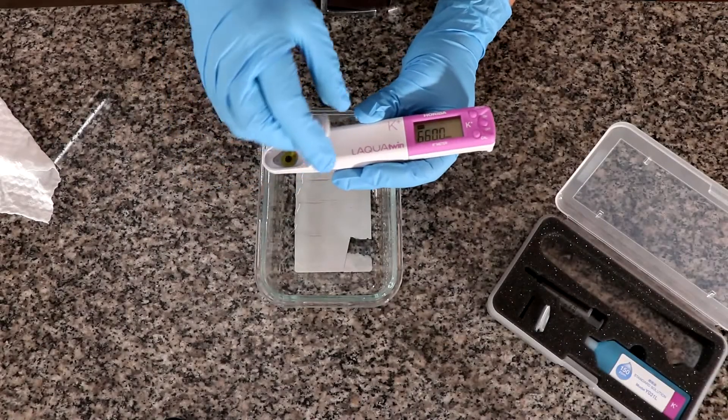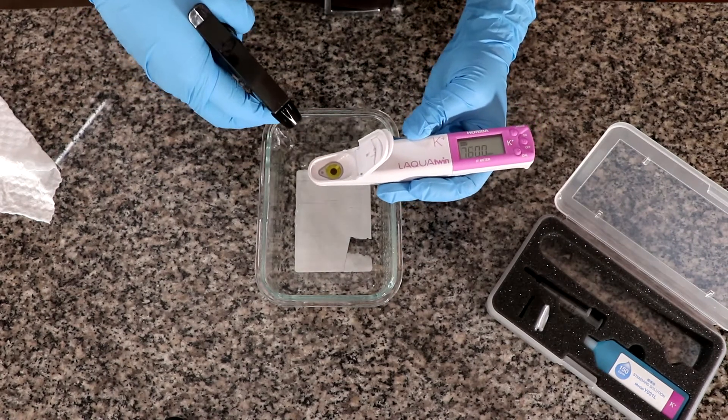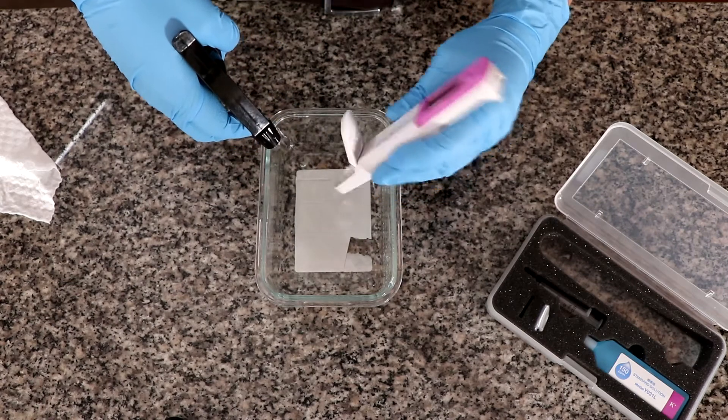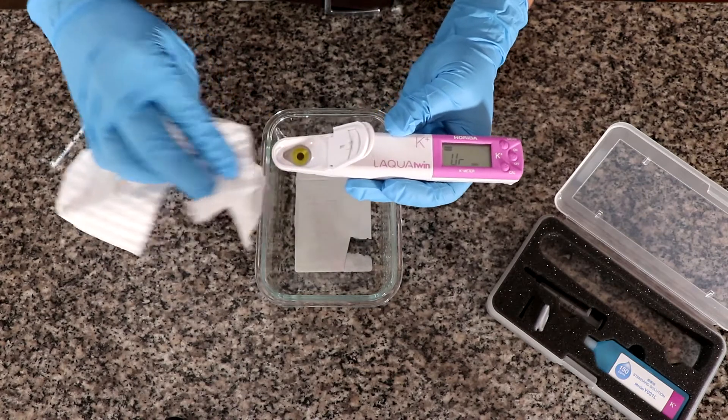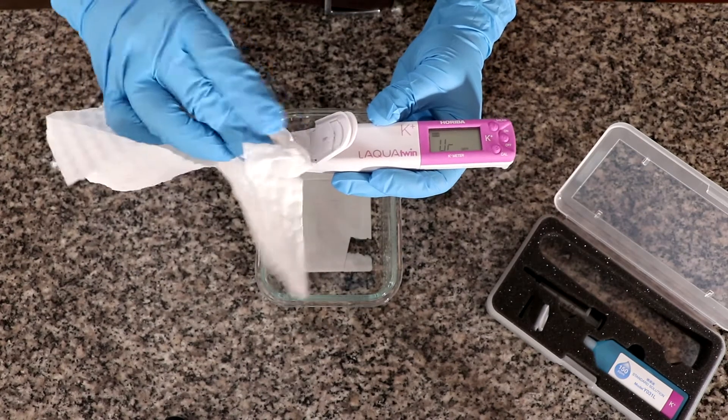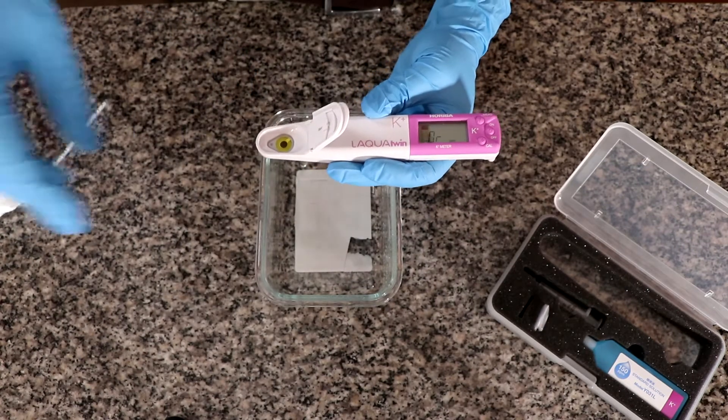Now we're going to perform the calibration process. You switch it on then we're going to use distilled water to wash the sensor receptacle. Then I'm going to use a paper towel to tap this very lightly to ensure there is no remaining solution there.